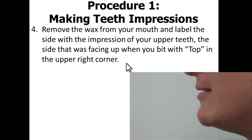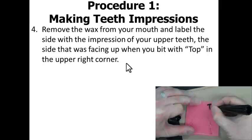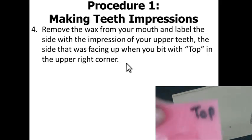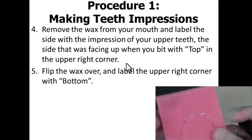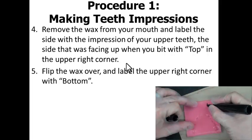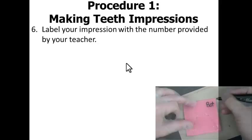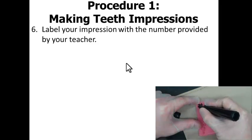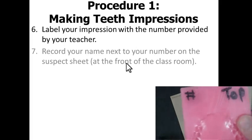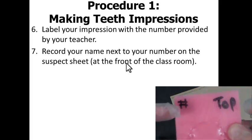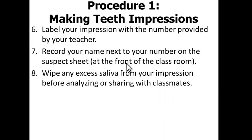When you are done, remove the wax from your mouth and label the side with the impression from your upper teeth — the side that was facing up when you bit it — with "top" in the upper right corner. Flip the wax over and label the upper right corner with "bottom." Label your impression with the number provided by your teacher, and then record your name next to your number on the suspect sheet at the front of the classroom. Be sure to wipe off any excess saliva from your impression before analyzing or sharing with classmates.